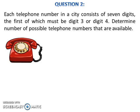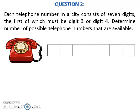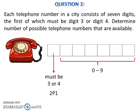To solve this problem, draw 7 slots like this. The first slot must be filled with either digit 3 or 4, so the number of ways to put a digit in the first slot is 2P1. The next 6 slots can be filled with any digits from 0 to 9.